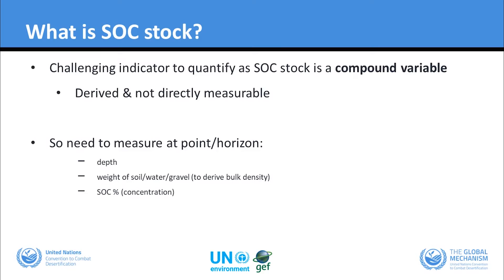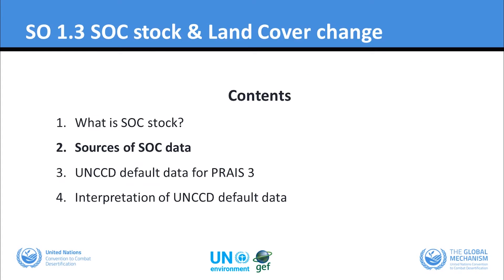Soil organic carbon stock is a challenging indicator because it is what we call a compound variable — it is derived from other measured variables and we don't directly measure it typically. At a single point or horizon in a soil profile we need to know the depth, the volume of soil, the weight of the soil water and gravel for bulk density, and the soil organic carbon concentration.